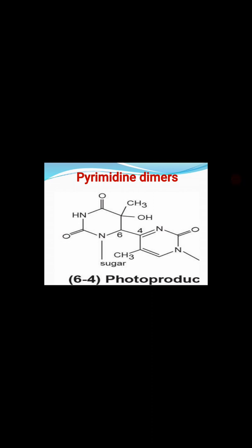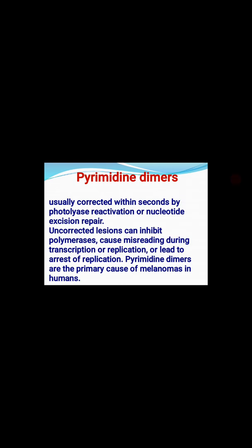When pyrimidine dimers are produced in DNA — which is very common due to UV radiation absorption — they represent a physical mutation. They are usually corrected within seconds by photolyase-mediated photoreactivation or by the nucleotide excision repair (NER) mechanism, both of which have been discussed in detail in another session. There are two main correction mechanisms: photoreactivation and nucleotide excision repair.